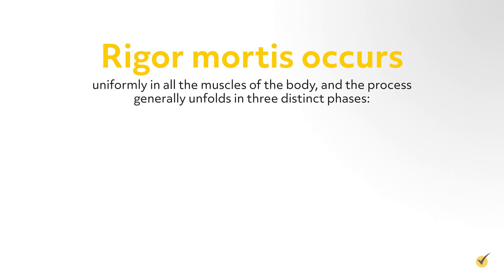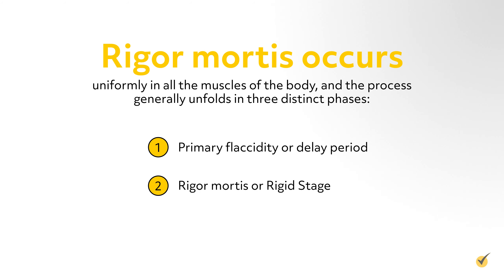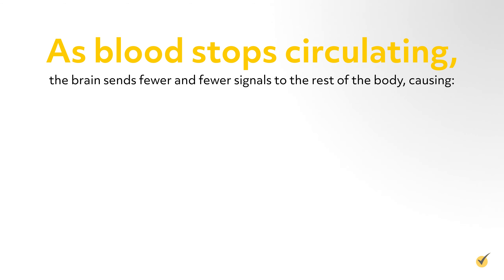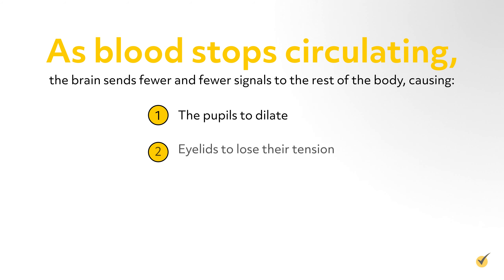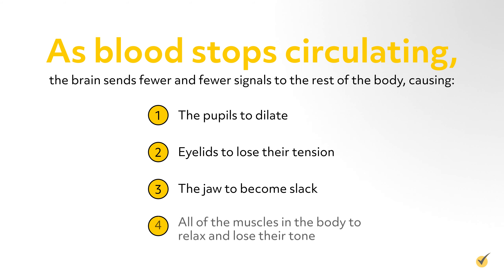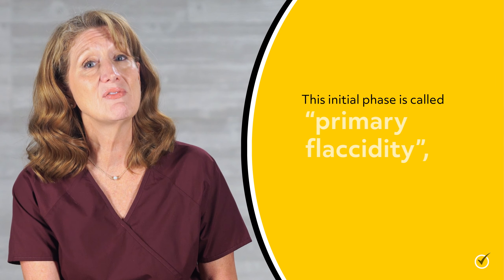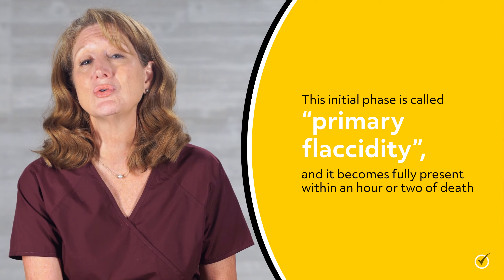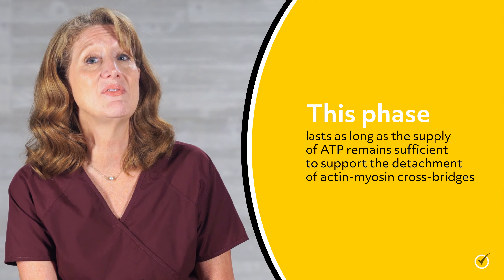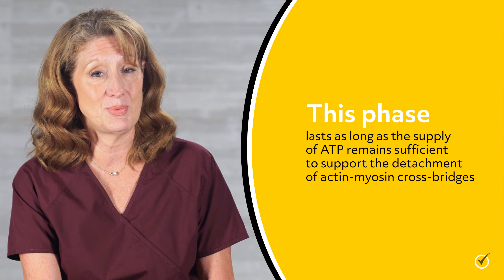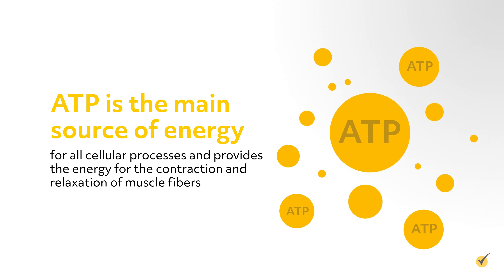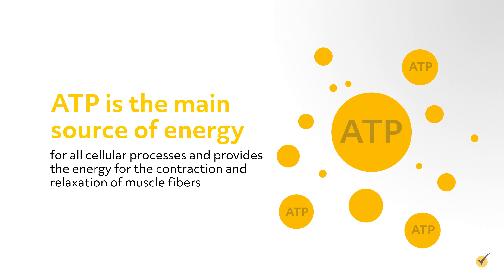Rigor mortis occurs uniformly in all the muscles of the body and the process generally unfolds in three distinct phases: primary flaccidity or delay period, rigor mortis or rigid stage, and secondary flaccidity. As blood stops circulating, the brain sends fewer and fewer signals to the rest of the body, causing the pupils to dilate, eyelids to lose their tension, the jaw to become slack, and all of the muscles in the body to relax and lose their tone. This initial phase is called primary flaccidity and it becomes fully present within an hour or two of death. This phase lasts as long as the supply of ATP remains sufficient to support the detachment of actin-myosin cross bridges. ATP is the main source of energy for all cellular processes and provides the energy for the contraction and relaxation of muscle fibers.